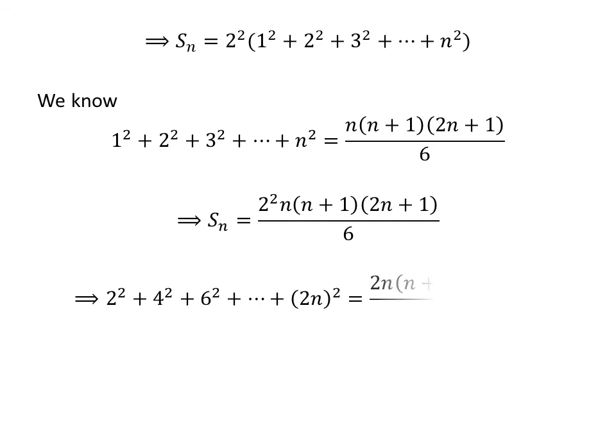Sum of squares of first n even numbers is 2 times n times n plus 1 times 2n plus 1 upon 3.